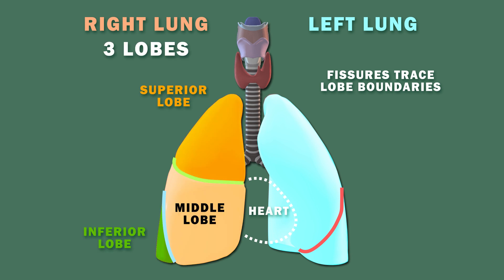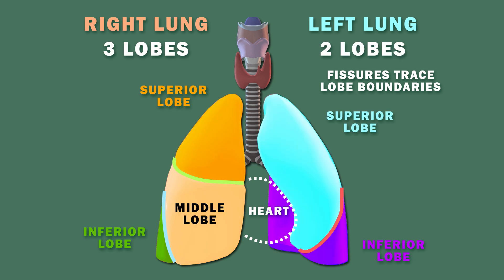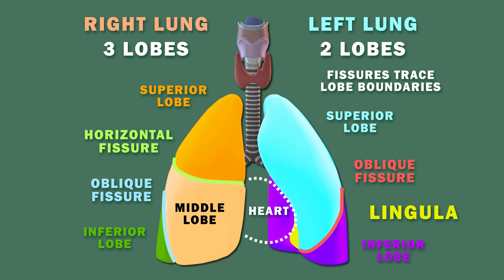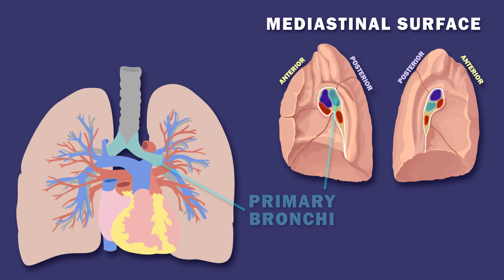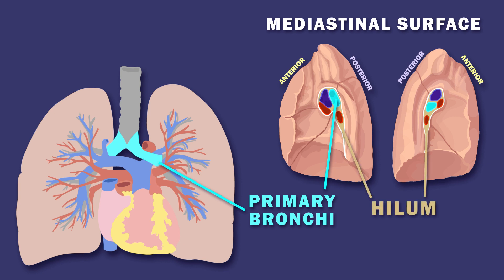The right lung has three lobes, whereas the left has two. The lingula is a projection on the left lung's upper lobe. The main bronchi enter the lungs right at the hilum, on the mediastinal surface of the lung.